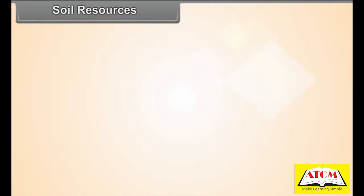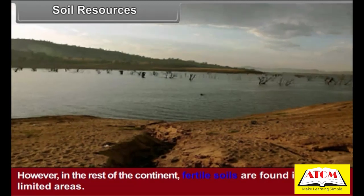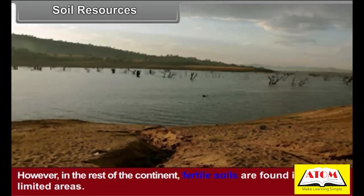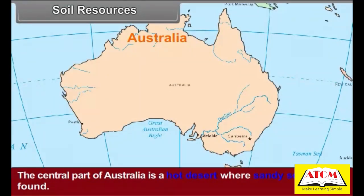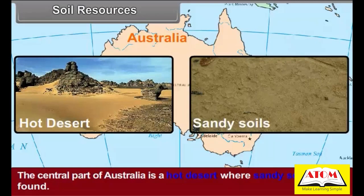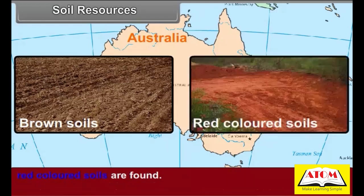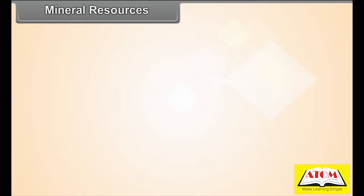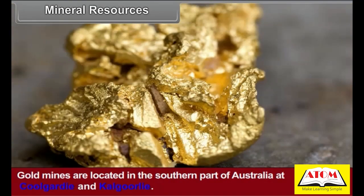The Murray-Darling basin has fertile soil; however, in the rest of the continent, fertile soils are found in very limited areas. The central part of Australia is a hot desert where sandy soils are found. Brown soils are found in the southern areas of Mediterranean climate, whereas in the northern regions of monsoon-type climate, red-colored soils are found.